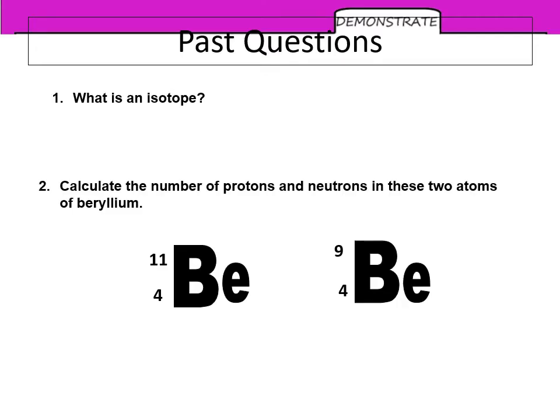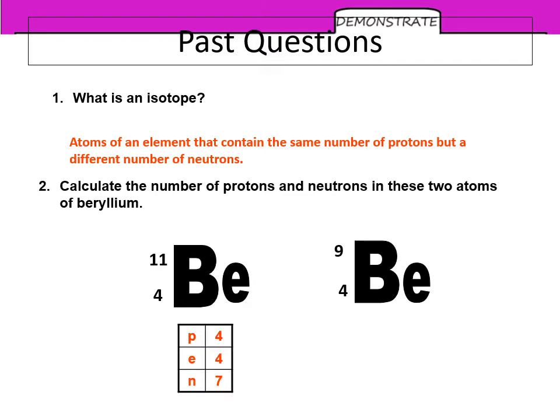So a few past paper questions. What is an isotope? And can you work out protons and neutrons for these two atoms or, strictly speaking, isotopes of beryllium? Isotopes again are atoms of an element with the same number of protons and a different number of neutrons. And therefore a different mass number you might add. Beryllium has four protons, four electrons and seven neutrons. Beryllium 9 has four protons, four electrons and five neutrons.